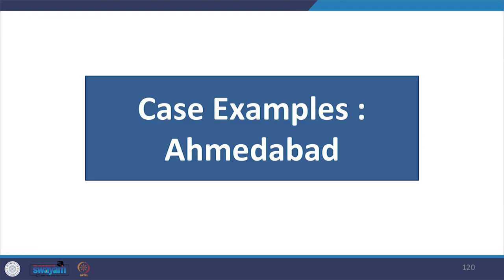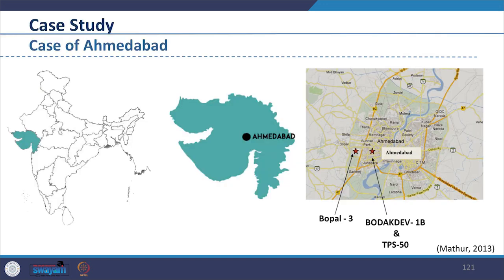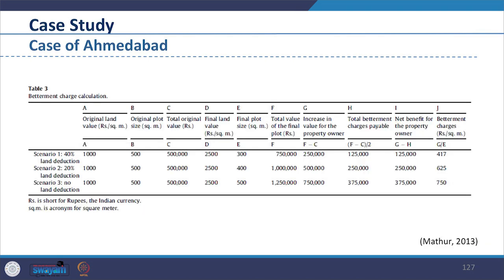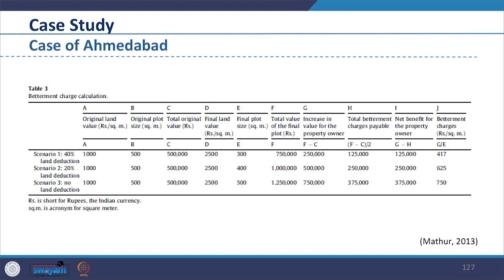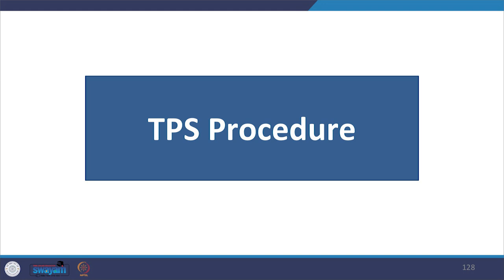Looking at case examples from Ahmedabad — Town Planning Scheme Bhopal 3, Bodhadev 1B and Town Planning Scheme 50 — a table shows how much final land parcel was given to landowners, the percentage of land that went for infrastructure and facilities such as roads and low income housing, and land reserved for sale. The average deduction ranged from 15 to 36%. Betterment charges are systematically calculated based on percentage of land deducted, original plot, final plot and their respective land values. The process of planning and executing the Town Planning Scheme is comprehensive, involving 50 steps in Gujarat, typically taking up to 4 years and following a three-stage process: draft, preliminary, and final.